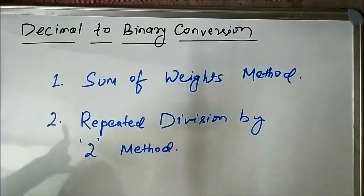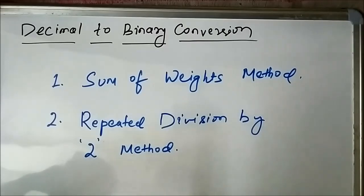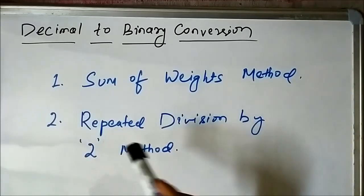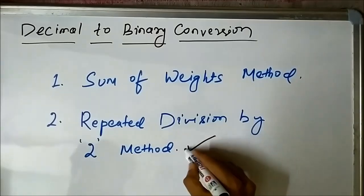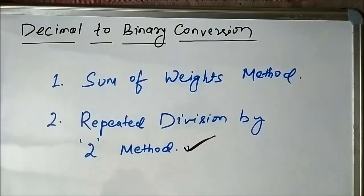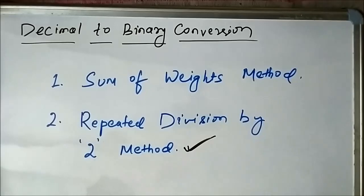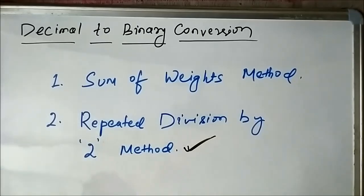There are two methods available to perform this conversion. The first one is the sum of weights method, and the second one is the repeated division by two method. Out of these two, the repeated division by two method is most commonly used. We will discuss both methods so that you can decide which one you are comfortable with and use it as per your wish.